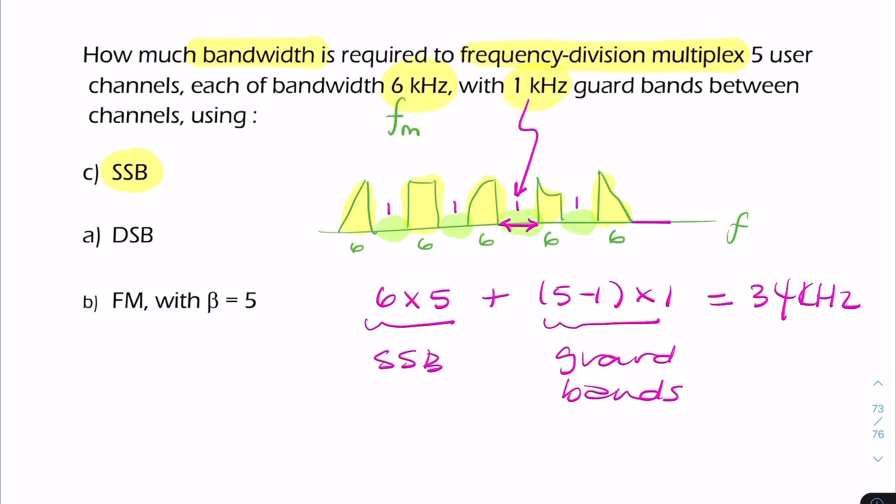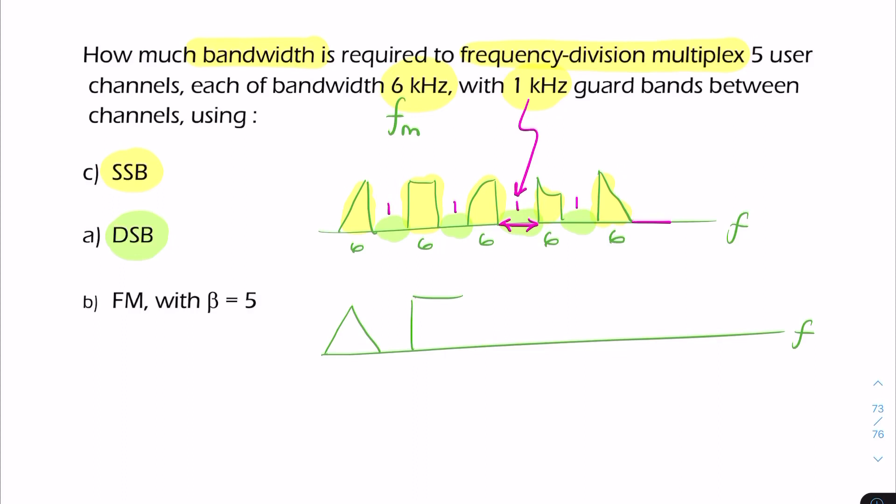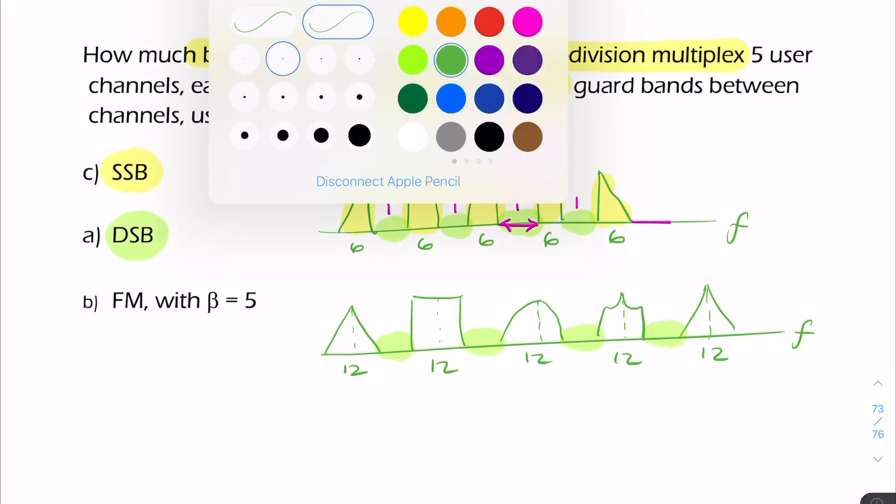Now for part b, the only thing that's changed is we now have DSB—double sideband. If we plot the spectrum again, it'll look similar but you'll have double the sideband: a lower sideband and an upper sideband. The bandwidth of each will be twice the baseband, so you'll have 12 kilohertz for each channel, with guard bands of 1 kilohertz between them.